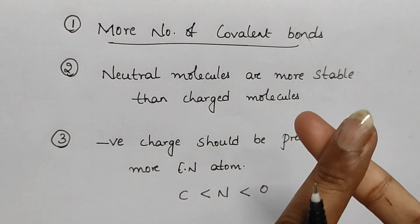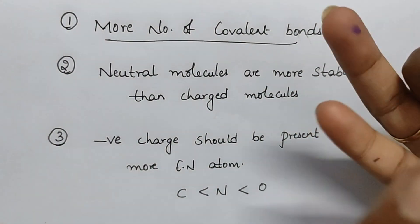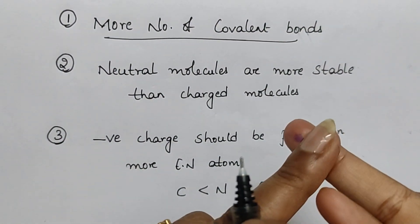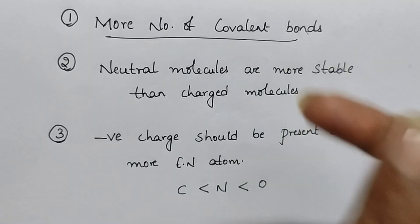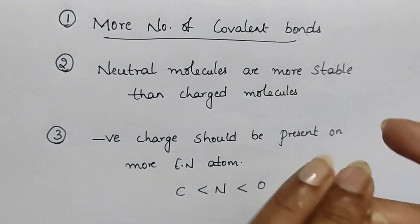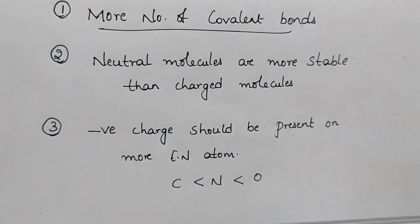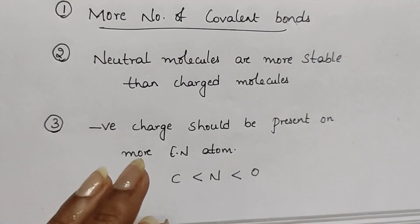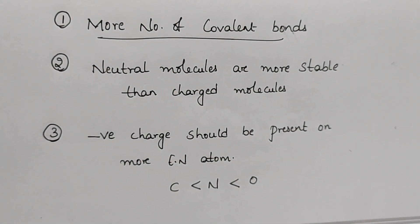Quick summary: more covalent bonds — first priority. Next, neutral molecules over charged molecules. In charged molecules, more electronegative atoms should have the negative charge.